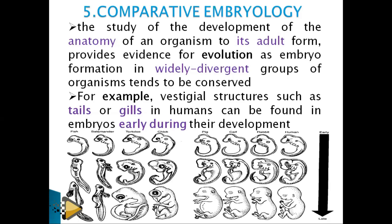One scientist stated that 'ontogeny recapitulates phylogeny,' meaning history repeats itself during development. In other words, during our life development we repeat our evolutionary trends. At a certain stage, for example, a human embryo has a tail, and at another stage it has gills.